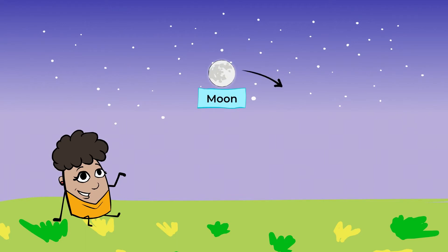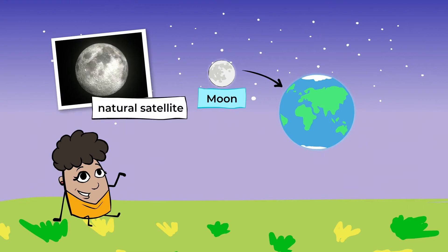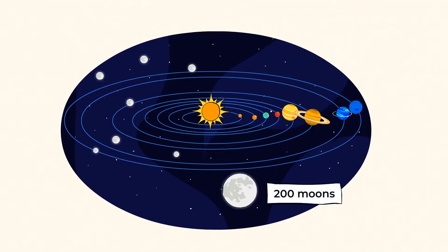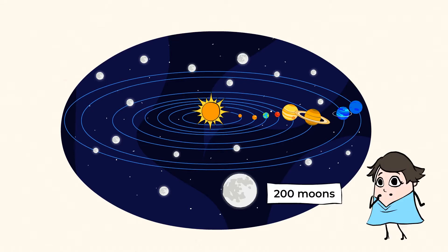As the moon we see is our planet's only natural satellite. There are more than 200 moons in our solar system. 200 moons? No way!